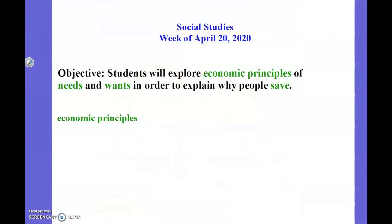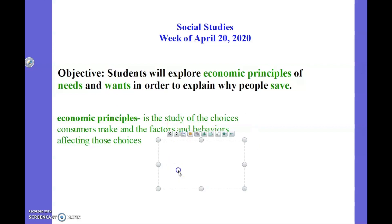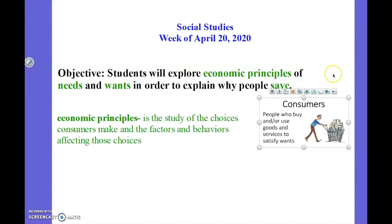Hi, and welcome to the third week of social studies remote learning. Our objective today is students will explore economic principles of needs and wants in order to explain why people save. Let's unpack the words in that objective so I can understand what I'm doing today. First thing we're going to unpack is economic principles — that is the study of the choices consumers make and the factors and behaviors affecting those choices. So I want to review what the word consumers means, so I'm going to look at that vocabulary card. Consumers are people who buy and or use goods and services to satisfy wants.